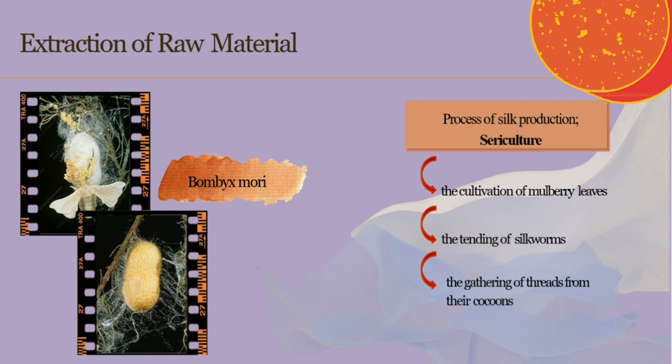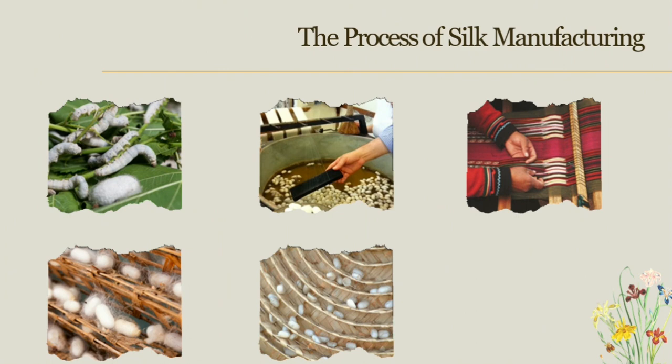As for the manufacturing process, the production of silk starts with silkworms and mulberry leaves placed on trays. Twig frames are prepared for the silkworms. Next, the cocoons are reeled, then soaked, and the silk is wound onto spools. Finally, the silk is woven using a loom.